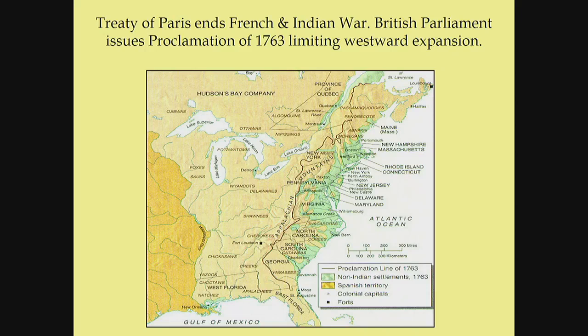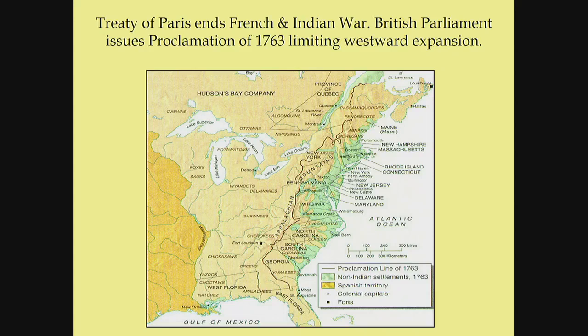The Stamp Act was a luxury tax on playing cards, legal papers, diplomas, licenses, and newspapers. It was more of an annoyance than anything, but it was enough to upset a lot of colonists. The Townshend Act is really key because it placed duties — taxes — on glass, lead, paint, and tea. It was eventually repealed, but it caused a lot of consternation during that time period.